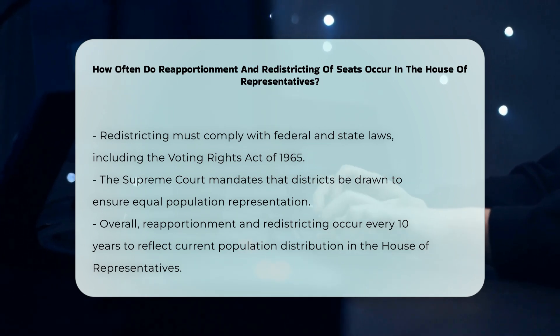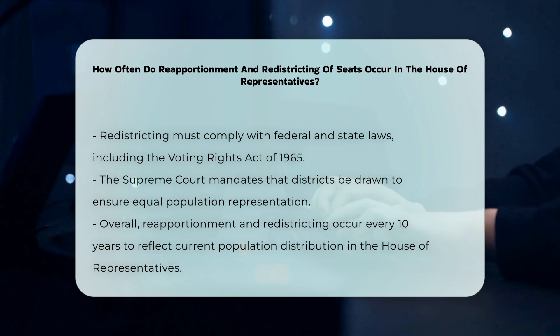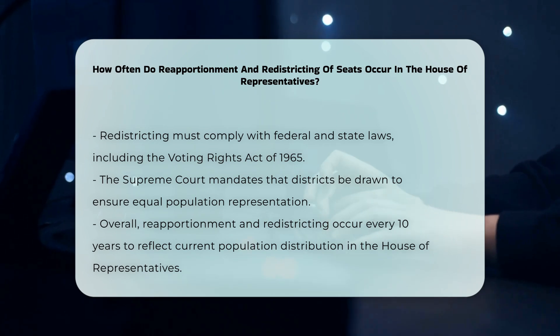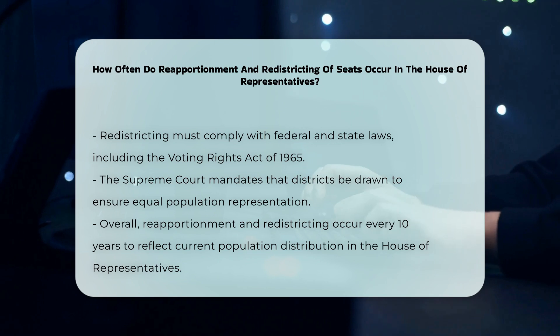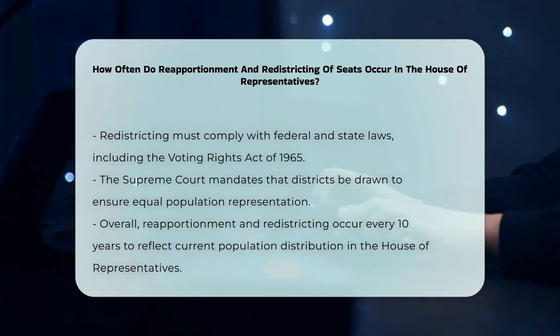In summary, reapportionment and redistricting occur every 10 years, following the completion of the decennial census, to ensure that the House of Representatives reflects the current population distribution across the states.